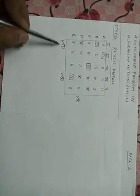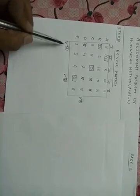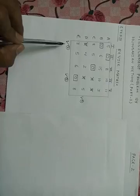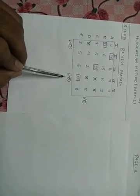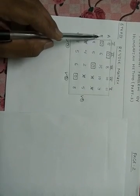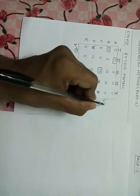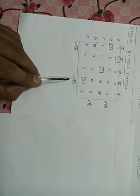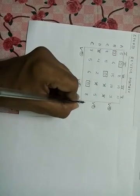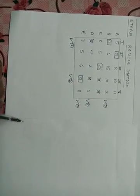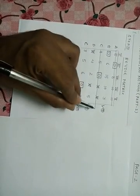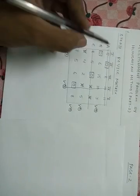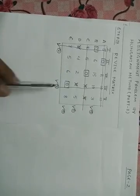Next we check the marked columns. If an assigned zero appears in a marked column, we mark the respective row. In column 1, the assigned zero is in row 2, so we mark row 2. In column 4, the assigned zero is in row 5, so we mark row 5. We then draw straight lines through all unmarked rows and all marked columns to cover the zeros.